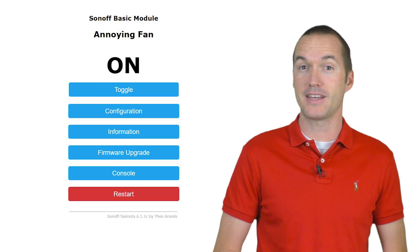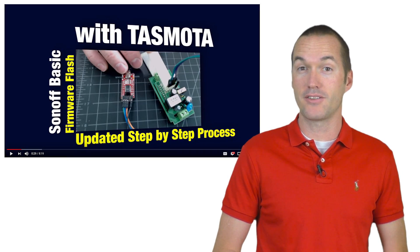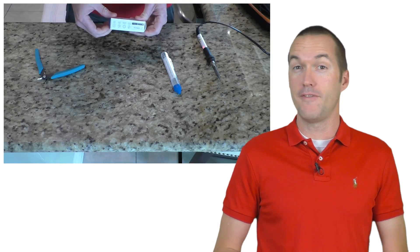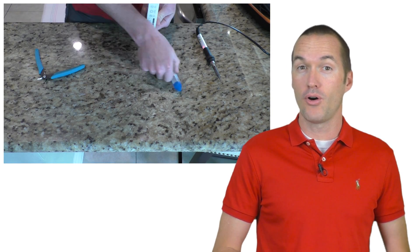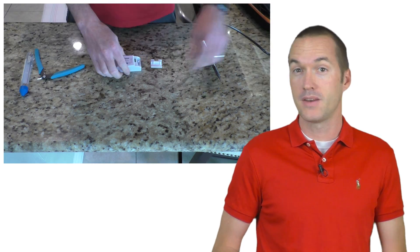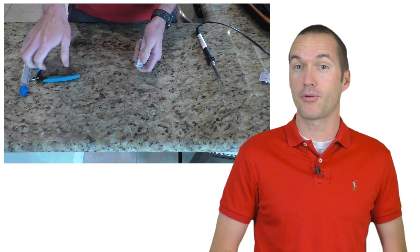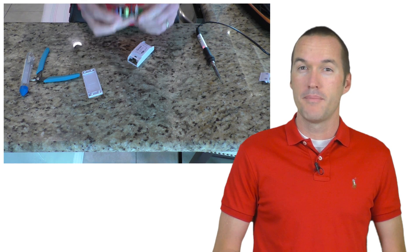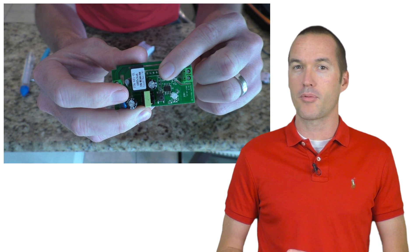If you've never flashed a Sonoff with Tasmota, I'm going to send you over to Dr. Zzs in just a minute for the most recent tutorial on how to get that done. If you buy a new Sonoff Basic, the holes that you need to access on the circuit board are going to come filled with solder. Dr. Zzs has a fancy 3D printed tool that he uses in the video, but since we need to be able to use these holes for our project anyways, I'm going to suggest that you just install some header pins in there instead.